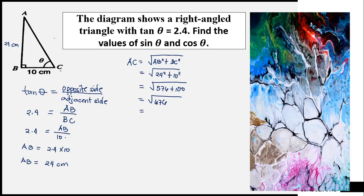The square root of 676 is equal to 26. So 26 centimeters is the measurement of line AC, which is our hypotenuse — the side opposite the right angle of the triangle.